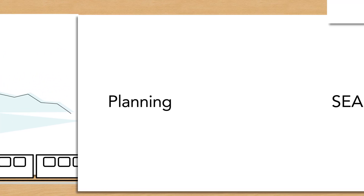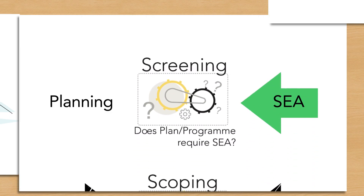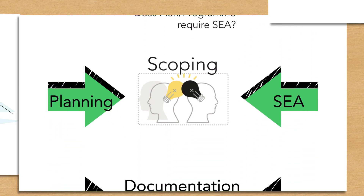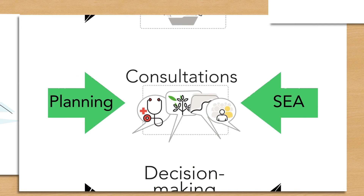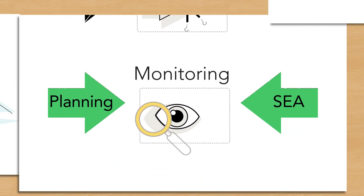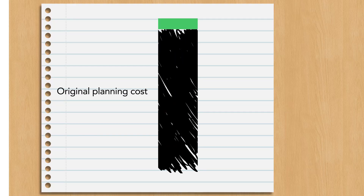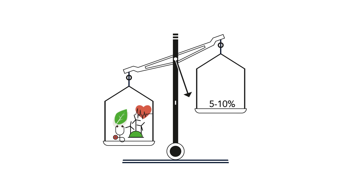Preparing a plan or program follows a number of steps that have logical links with the SEA procedure. Therefore, it's more effective to integrate SEA into planning instead of doing first one and then the other. This saves time and keeps additional costs for the planning procedure modest. Any cost or delay that might arise from the SEA is easily outweighed by the benefits.